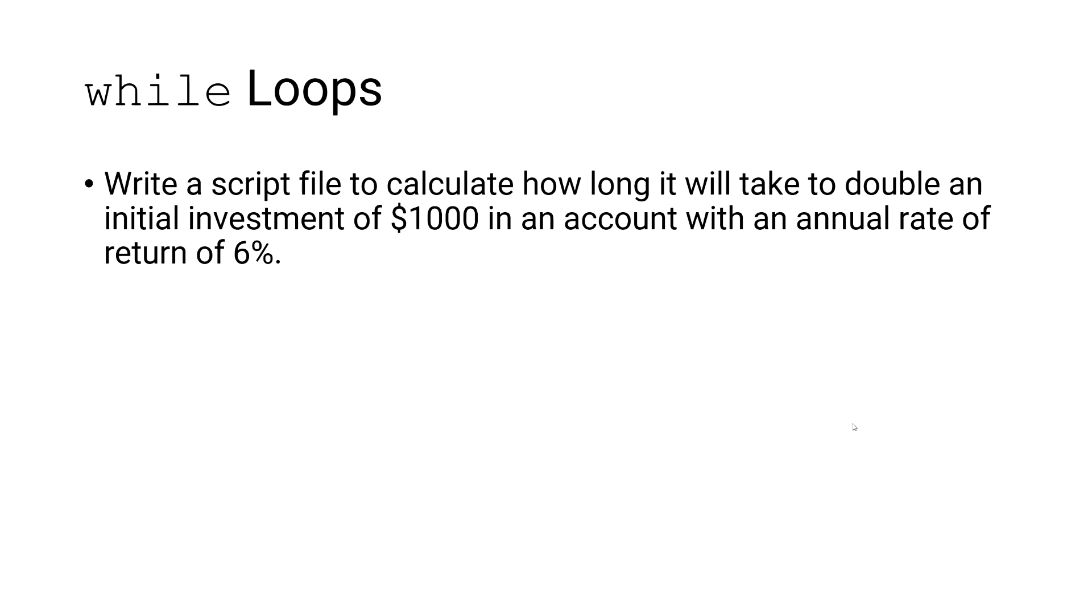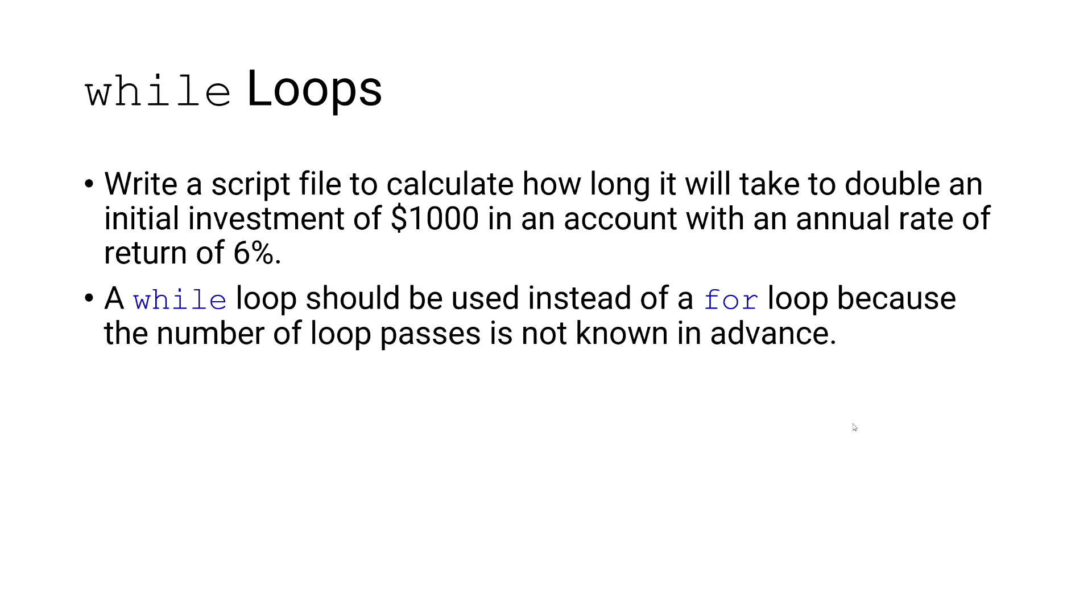In this video, we're going to write a script file to calculate how long it will take to double an initial investment of $1,000 in an account with an annual rate of return of 6%. A while loop should be used instead of a for loop because the number of loop passes is not known in advance. In other words, we don't know how many years it will take to double our investment.